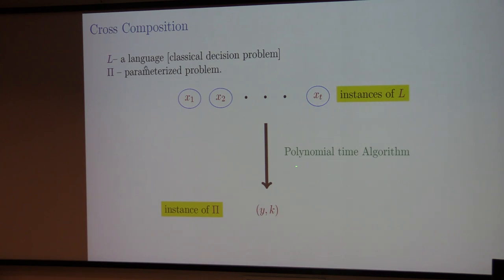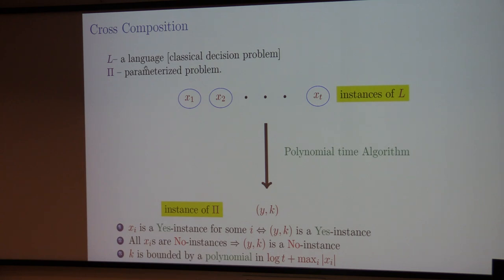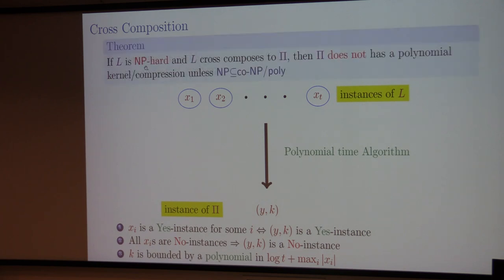If you want to rule out a polynomial kernel for a problem pi, you do cross-composition. You start with a language L, take T instances of it, and in polynomial time — polynomial in the input length — output an instance of pi, which is a parameterized problem. Then certain properties must hold.